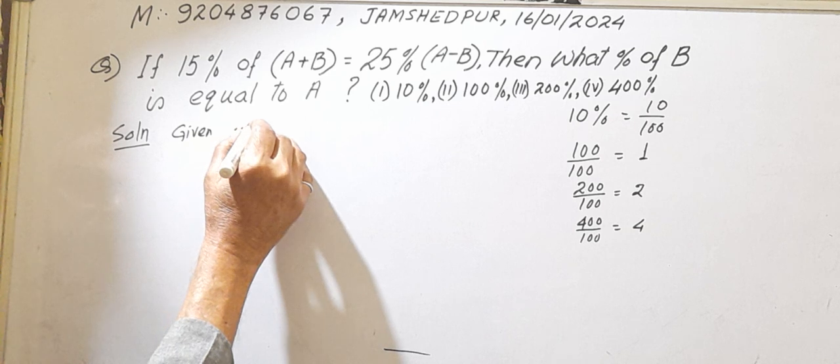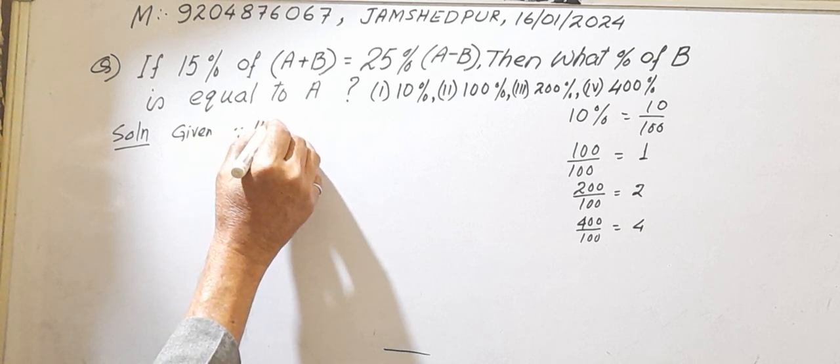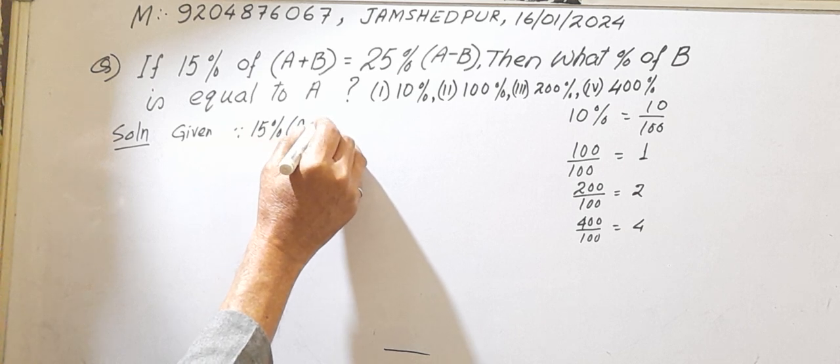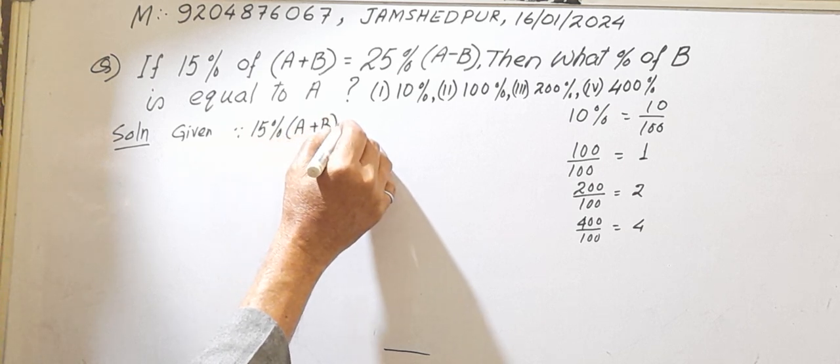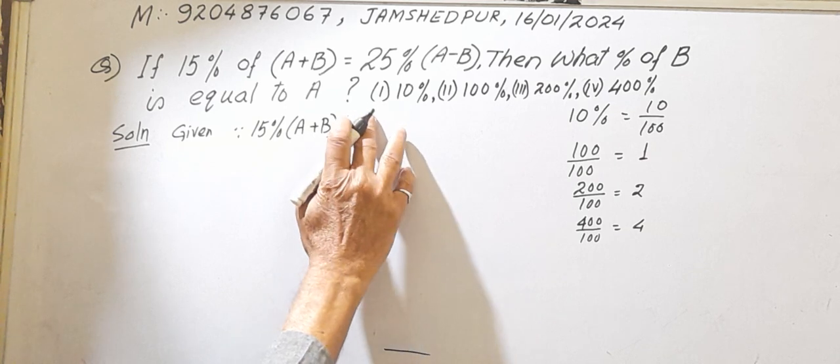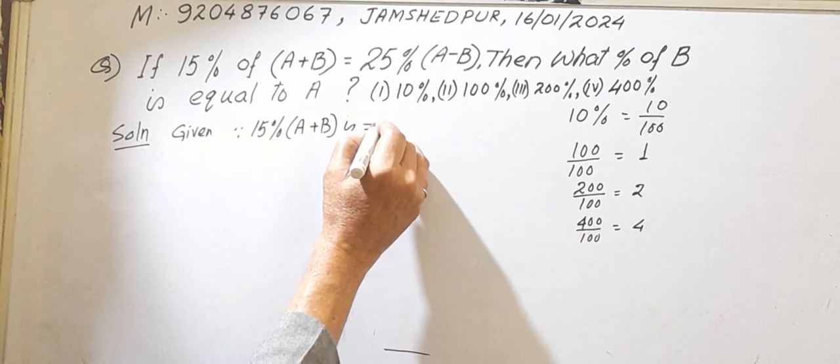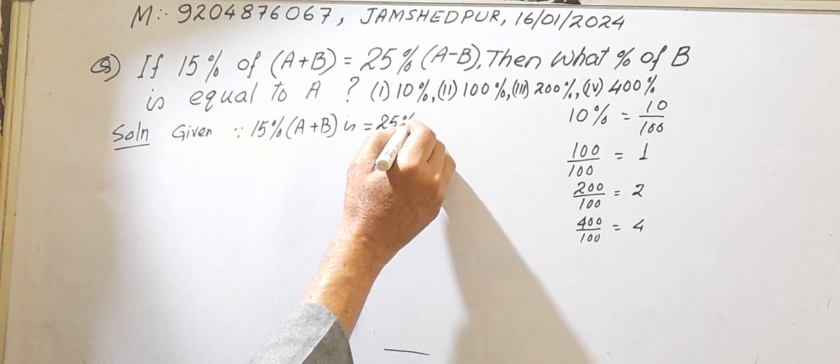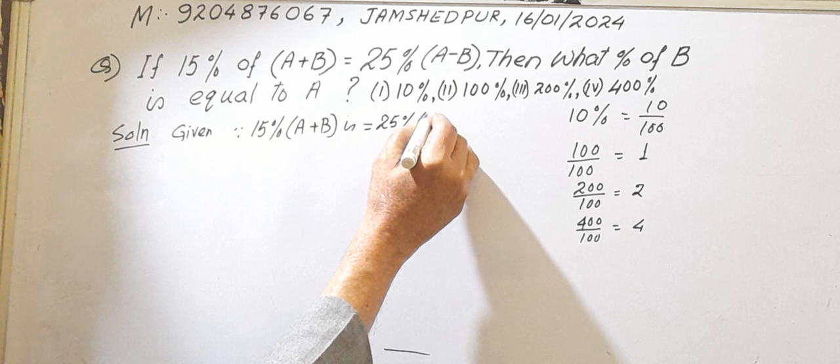Now let's start the solution. Given: 15% of A plus B is equal to 25% of A minus B.